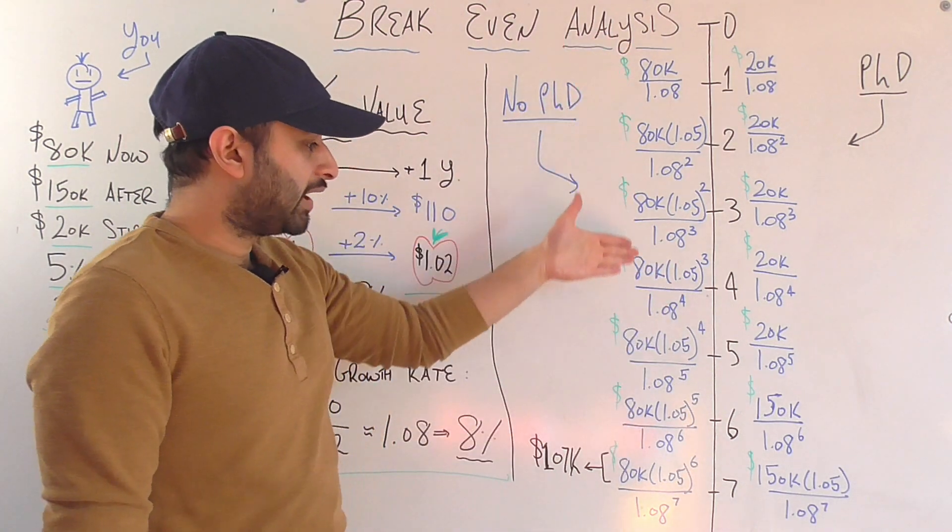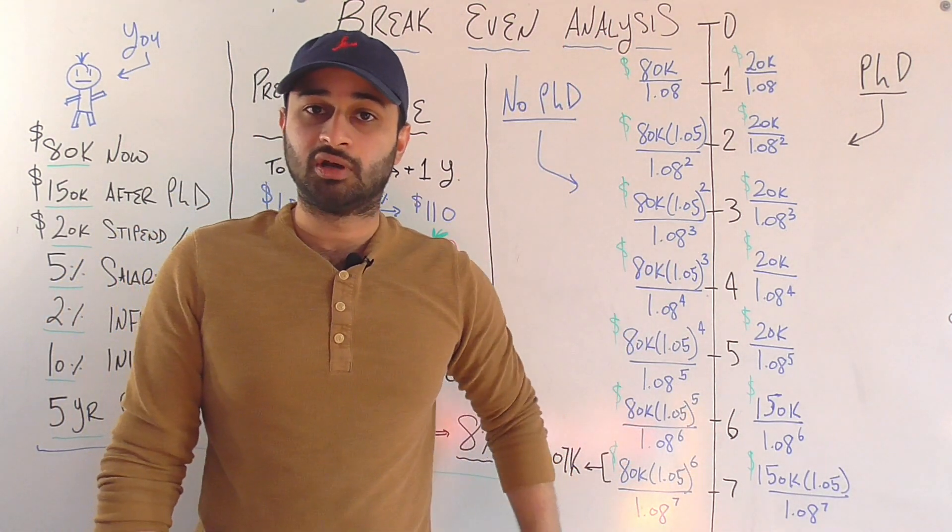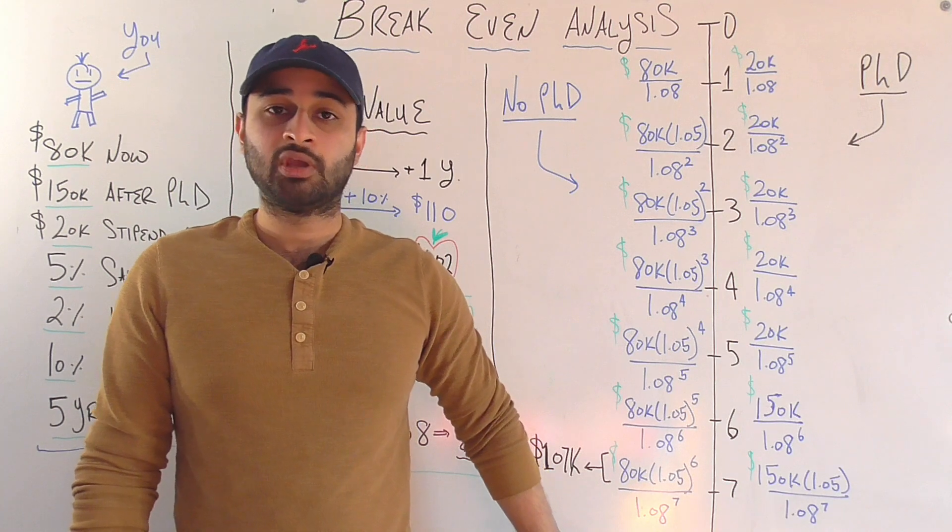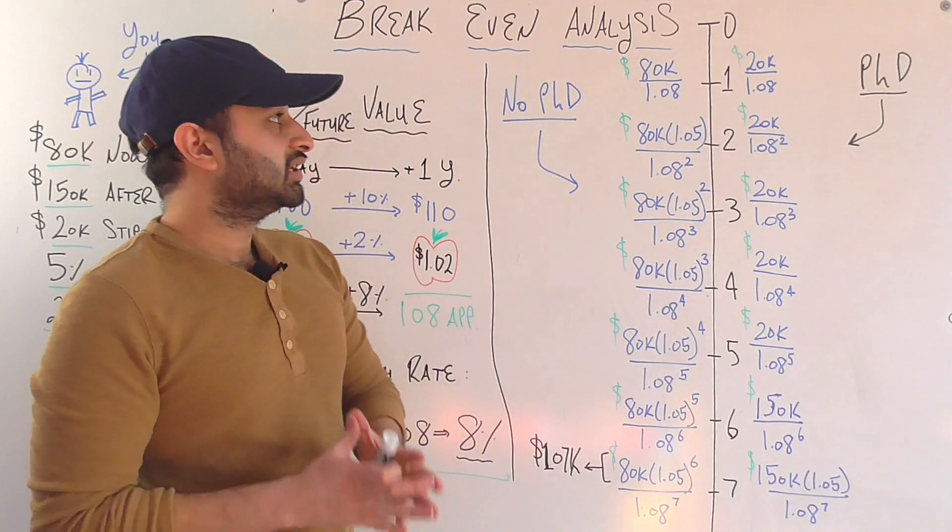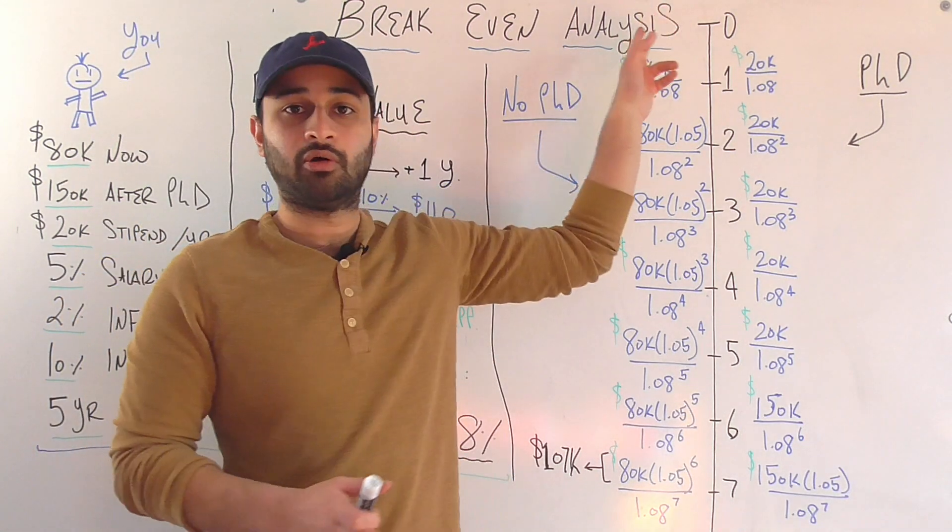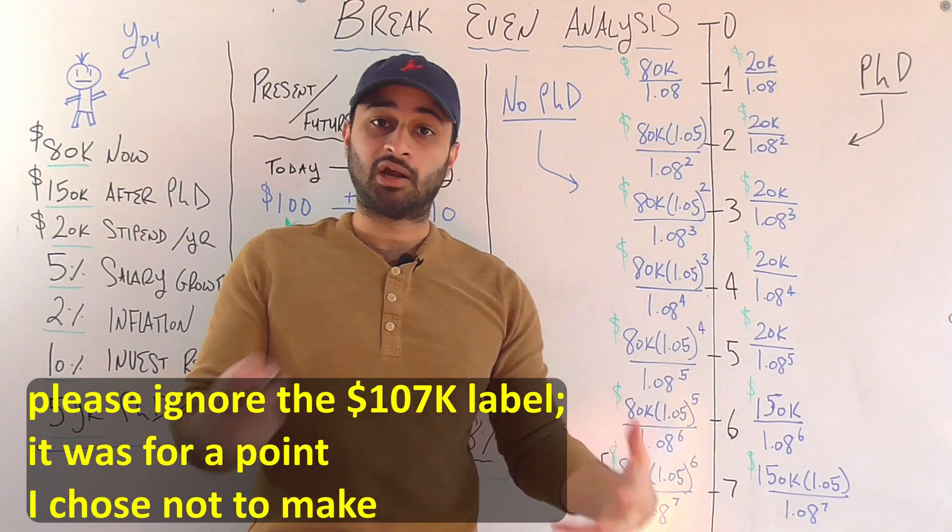So if I were to add up all of these values up until some whatever number of years I'm looking out into the future, then that is going to give me the current present value of this income stream today at zero, when I'm actually choosing whether or not to make that decision.